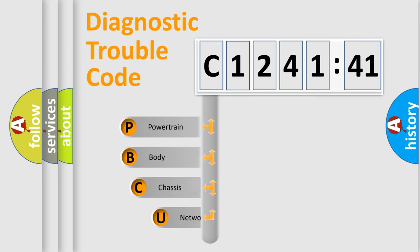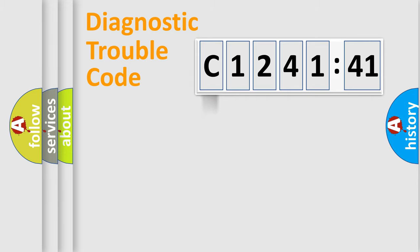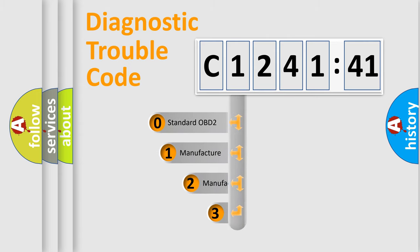First, let's look at the history of diagnostic fault code composition according to the OBD2 protocol, which is unified for all automakers since 2000. We divide the electrical system of an automobile into four basic units: Powertrain, Body, Chassis, and Network.